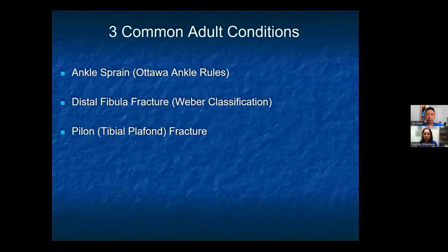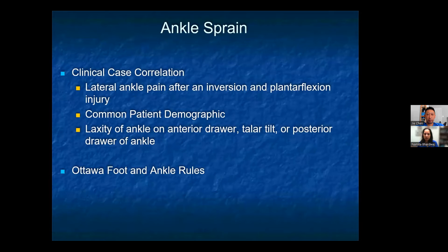We're going to move on to the common adult conditions. We will touch on the ankle sprain and discuss the Ottawa ankle rules, distal fibula fractures and the Weber classification, and pylon/tibial plafond fractures. Ankle sprains commonly present as lateral ankle pain after an inversion and plantar flexion injury, most often in young athletes. You will find laxity on the anterior drawer, talar tilt, or posterior drawer ankle examinations, and this is where your Ottawa foot and ankle rules come into practice.